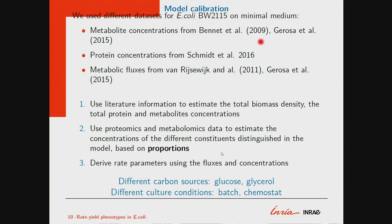We have different conditions — different carbon sources and different culture modes: batch and chemostat — but we do a calibration for each situation. Our aim is to see, given a single condition, what is the phenotypic space of rate and yield that we can obtain by varying the resource allocation strategy. We are not dealing with the switch between different environmental conditions — it is the same context but used differently.